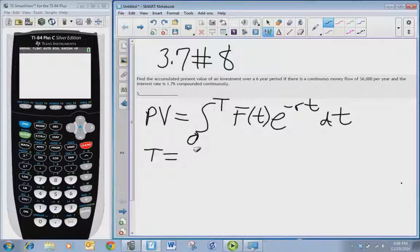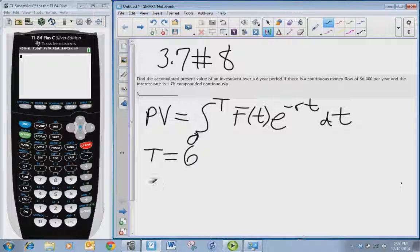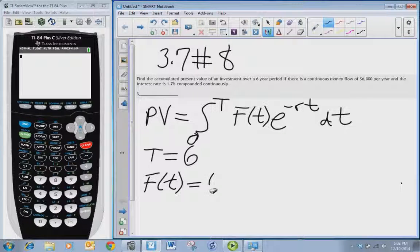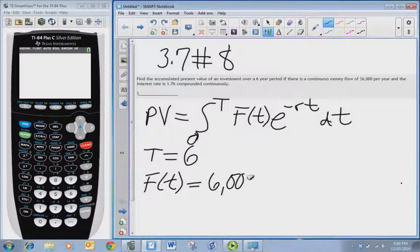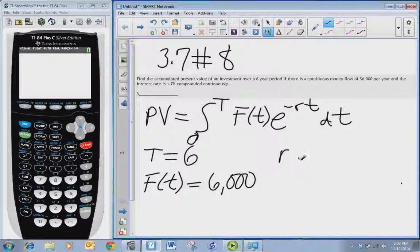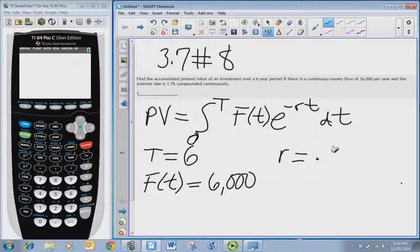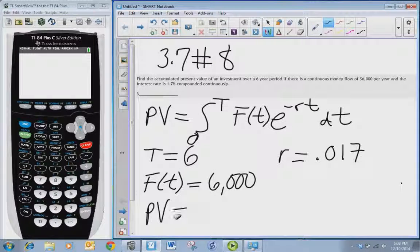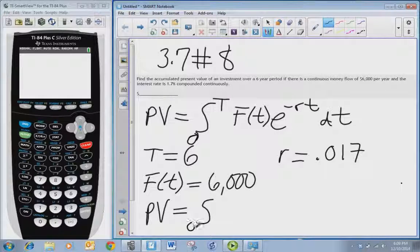It's over a six-year period so T is going to be 6. F(t) is just a constant function because it's a constant flow of money of six thousand dollars per year, and r converted to a decimal is 0.017.